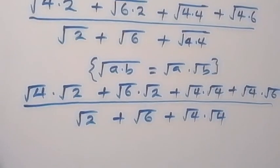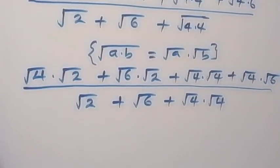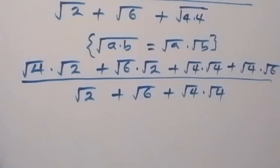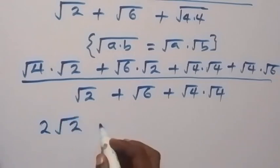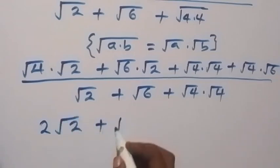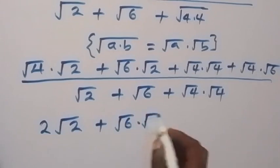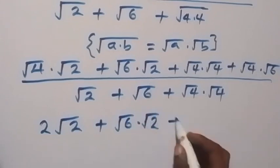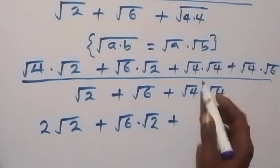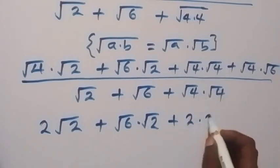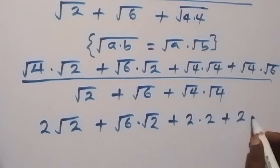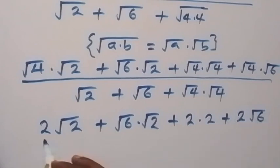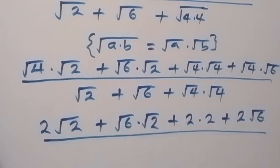Then in the next step we can reduce this. We have here root 4 — since root 4 is 2 — so we get 2 times root 6, plus 2 times root 2 and plus root 2 times root 6. Then divided by what we have in the denominator.